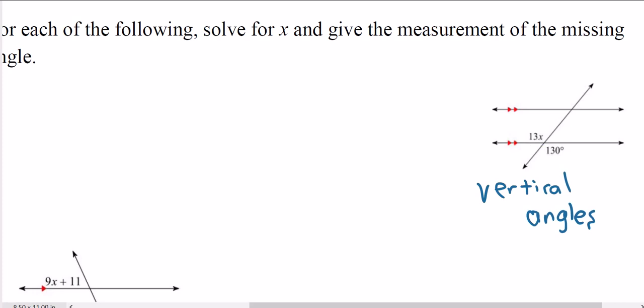Hopefully you're fine with these being vertical angles. You've seen angles like this before in the past. We know that vertical angles are congruent and so we're going to set these equal to each other. We have 13x is equal to 130 degrees and that's because vertical angles are congruent. They're equal to each other.